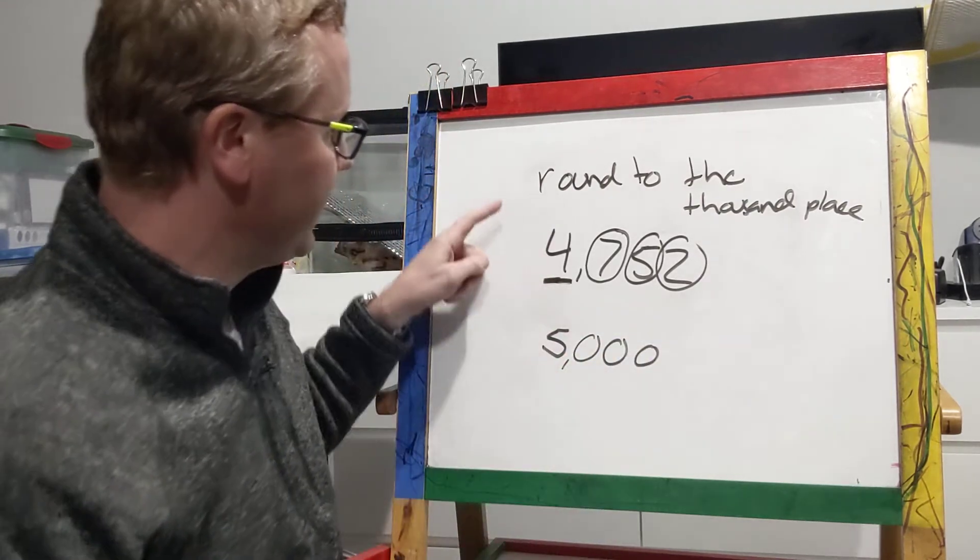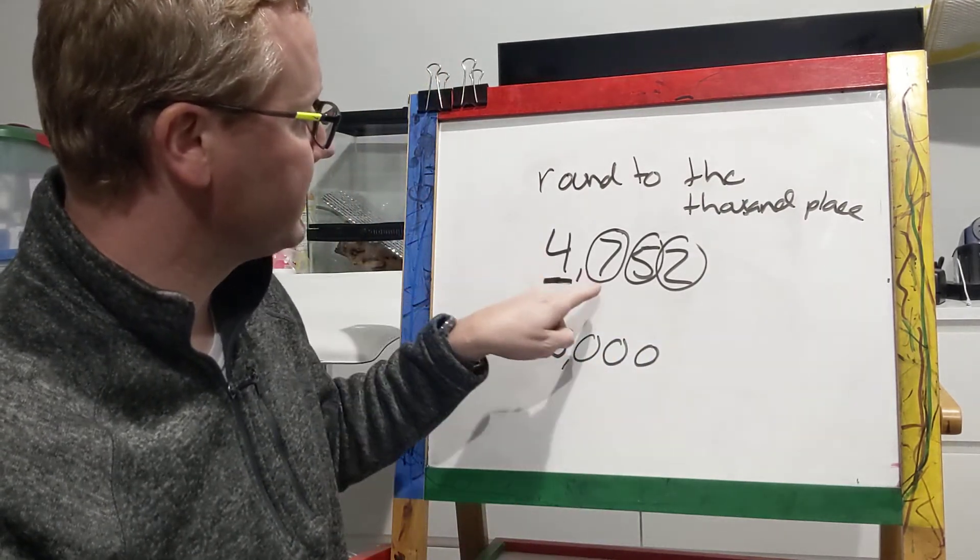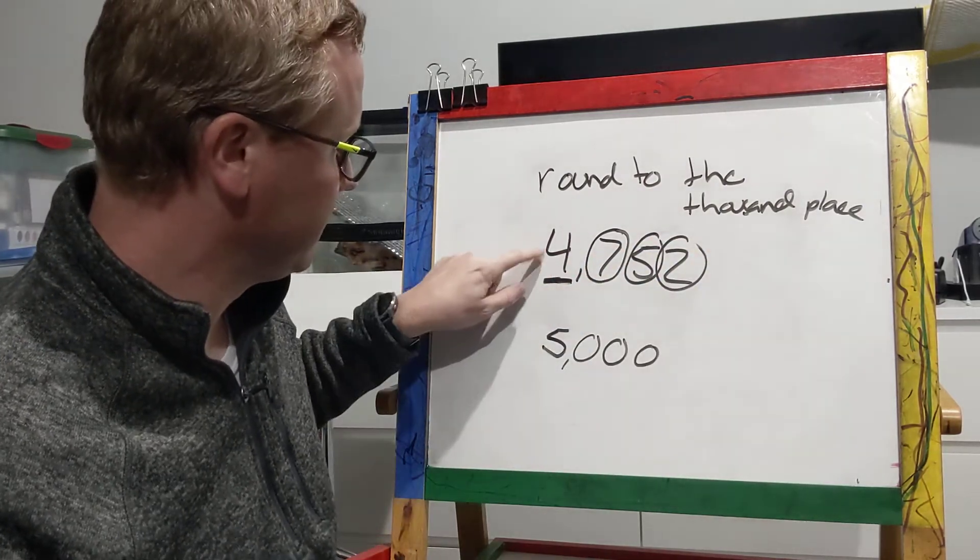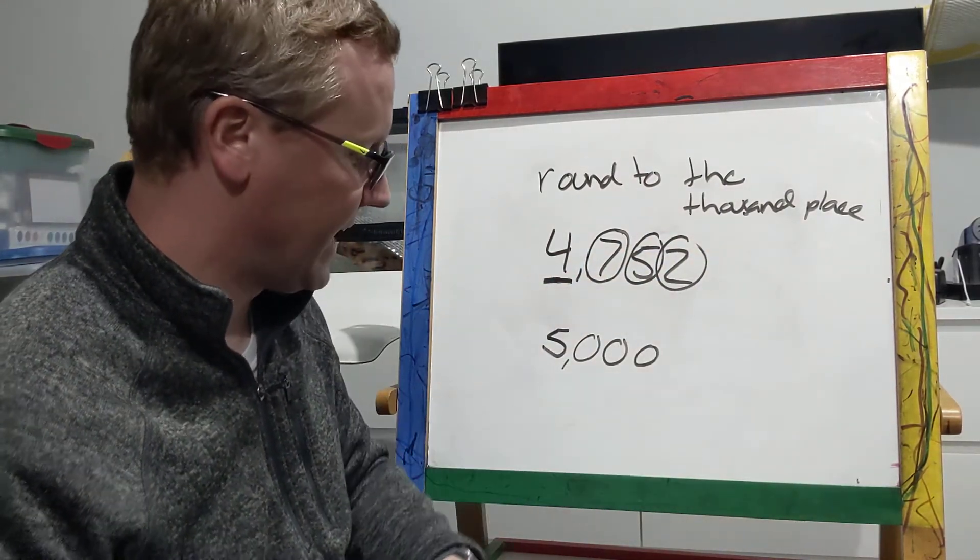So our new rounded number, when we round four thousand seven hundred fifty two to the thousands place, rounds to five thousand.